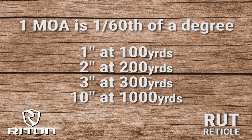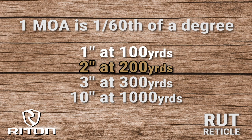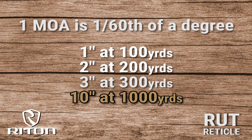One MOA at 100 yards equals one inch. One MOA at 200 yards equals two inches. So if we took that out to 1,000 yards, one MOA would be ten inches.